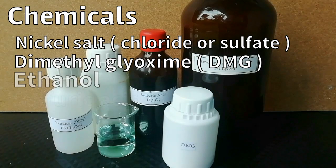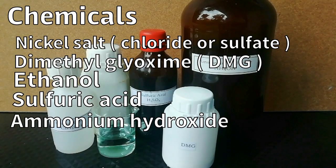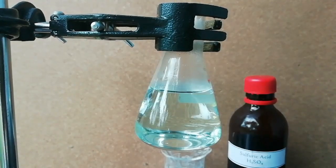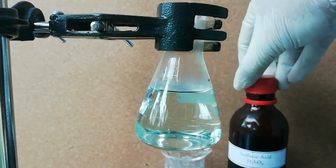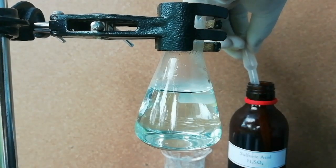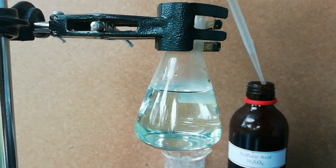The main chemicals that we are going to use are nickel salts and DMG, also known as dimethylglyoxime. Dissolve two grams of nickel salt in hot water, then add one or two drops of sulfuric acid to acidify the solution.